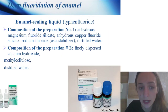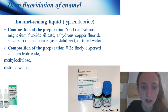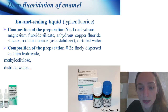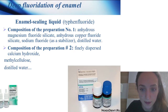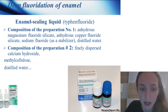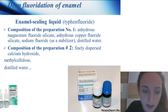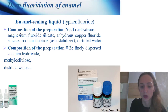Deep fluoridation of enamel — enamel sealing liquid. Composition of preparation number 1: anhydrous magnesium fluoride silicate, anhydrous copper fluoride silicate, and sodium fluoride. Composition of preparation number 2: dispersed calcium hydroxide and methyl cellulose with distilled water.